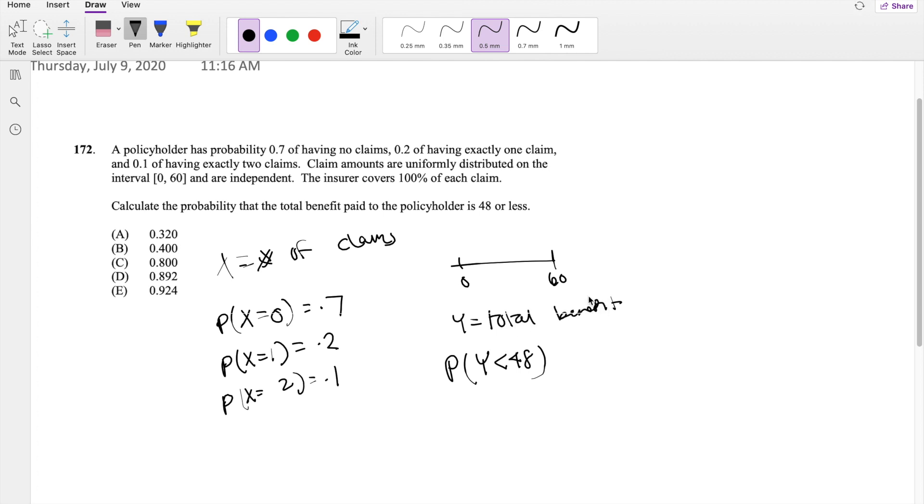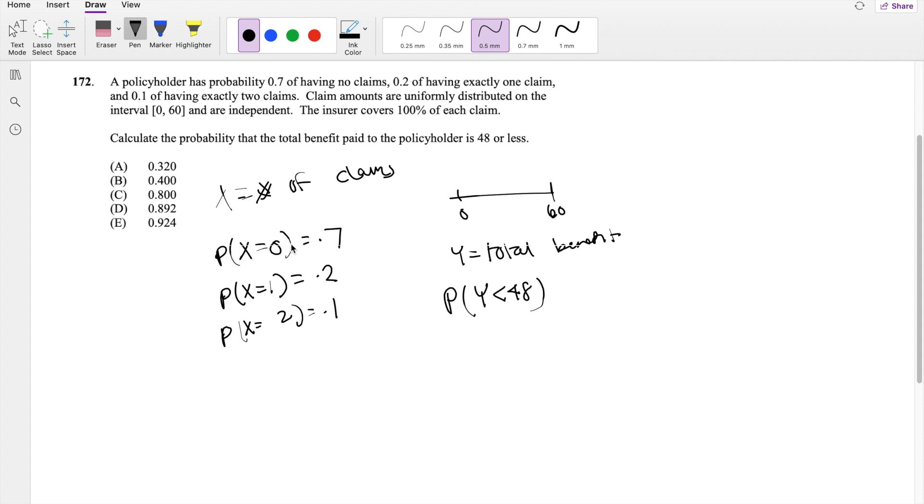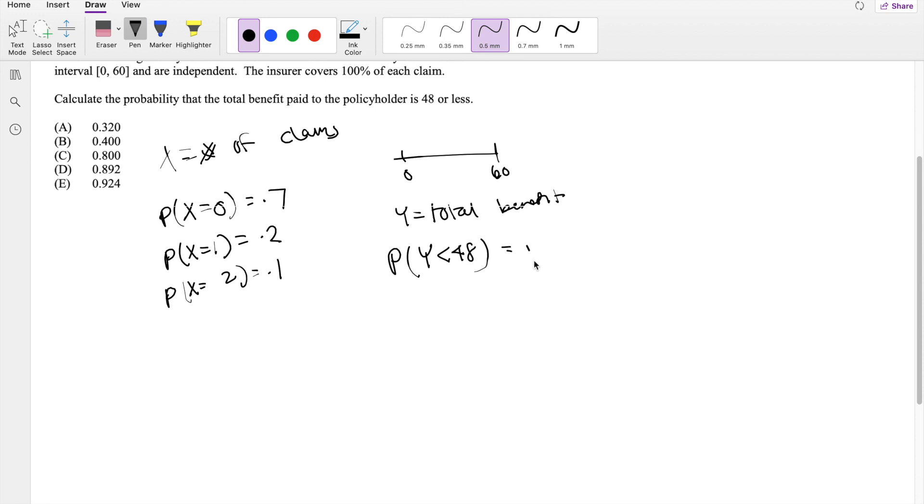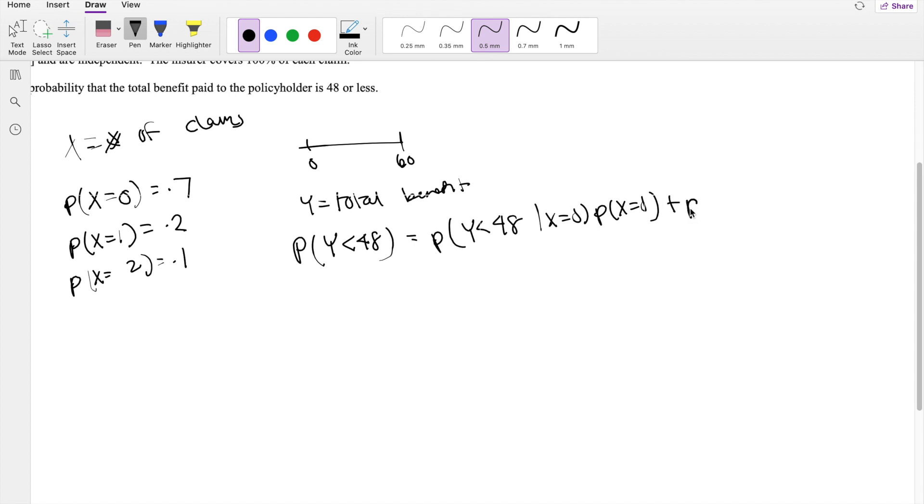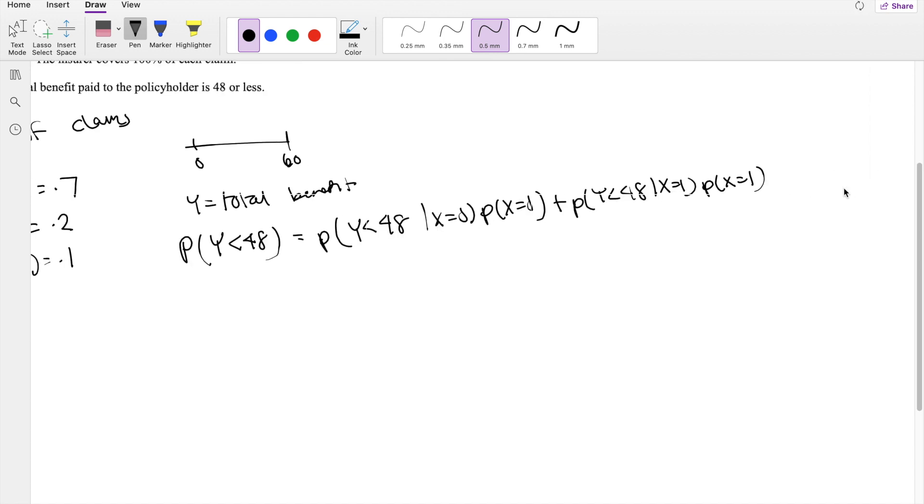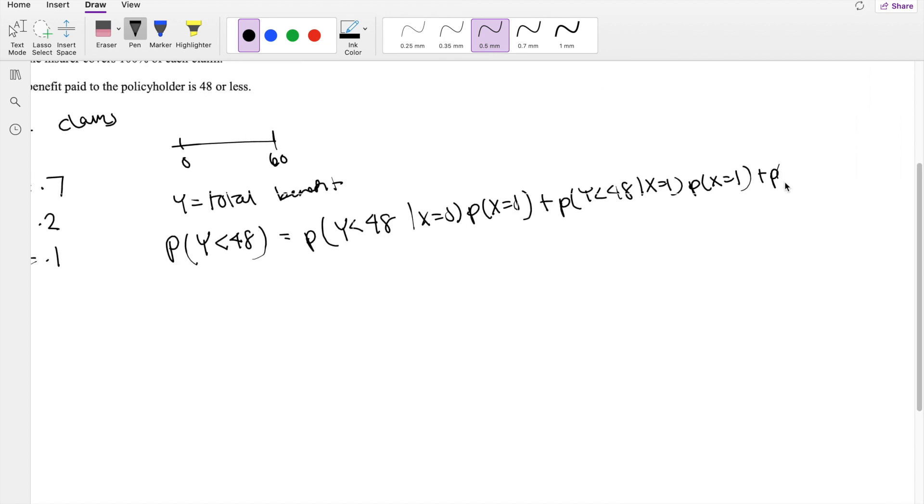So what is that probability? Well, because we have different conditions, we can use our law of total probability. So we can say the probability of y is less than 48, given x is equal to 0, times the probability that x is equal to 0, plus the probability that y is less than 48, given x is equal to 1, times the probability that x is equal to 1. And finally, the probability that y is less than 48, given x is equal to 2, times the probability that x is equal to 2.